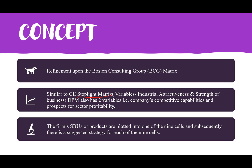It is a refinement of the BCG Matrix, similar to the Stoplight Matrix. Like the Stoplight Matrix, it has two variables: companies' competitive capabilities, which are similar to 'strength of business,' and prospects for sector profitability, which is similar to 'industrial attractiveness.'